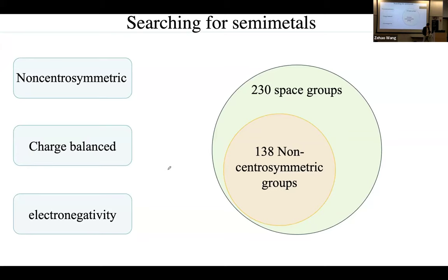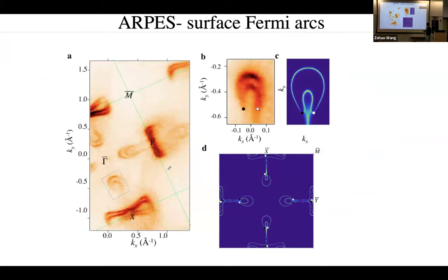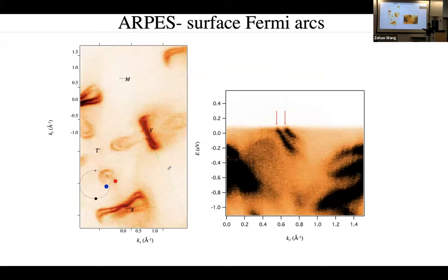Anton asks about visualizing the Fermi arc topology. The surface state of TaAs shows two arcs. Draw a circle enclosing only one of the arc termination points (Weyl point projection) and plot the dispersion along that circle — you see two chiral edge states. That's related to the fact that this Weyl point projection has charge two, i.e., Chern number two.